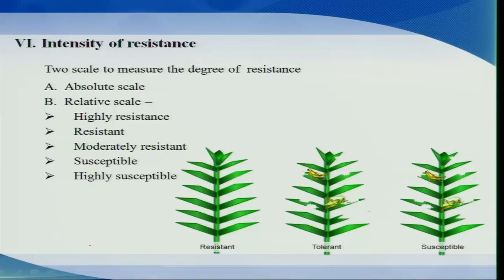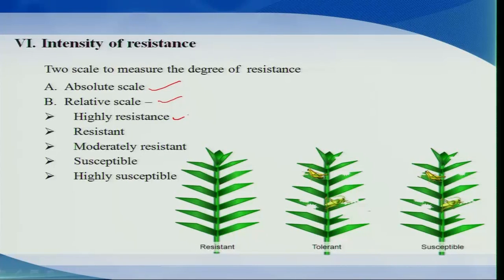How do we measure resistance? It can be measured on an absolute or a relative scale. While an absolute scale can be developed, most often we use the relative resistance factor — assessing whether a plant is highly resistant, resistant, moderately susceptible, or highly susceptible by comparing with other individuals of the same species. In this class we have dealt with the definition of host plant resistance and the types of resistance. In the next class, let us look into the mechanisms of resistance. Thank you.